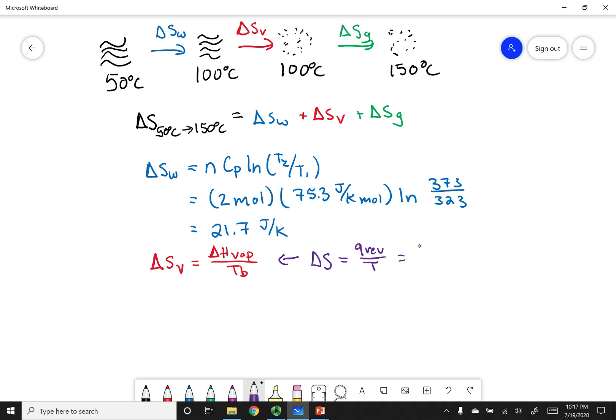Now remember q is going to equal delta h if I'm under constant pressure. And remember t is going to be the temperature at which I do this process, which happens to be the boiling point. So that's how I derived the equation. But what we care about is how we can fill this equation out because you are given it in your info sheet.